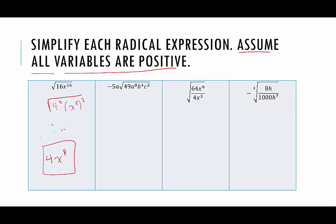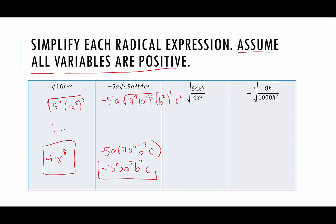The next example: negative 5a times the square root of 49a to the 8th, b to the 4th, c squared. Under the radical, we rewrite each factor as a perfect square: 49 is 7 squared, a to the 8th is a to the 4th squared, b to the 4th is b squared squared, and c squared is just c squared. Taking square roots: negative 5a stays outside. The square root of 7 squared is 7, of a to the 4th squared is a to the 4th, of b squared squared is b squared, and of c squared is c. Combining factors: negative 5 times 7 is negative 35, a times a to the 4th is a to the 5th, giving us negative 35a to the 5th b squared c.